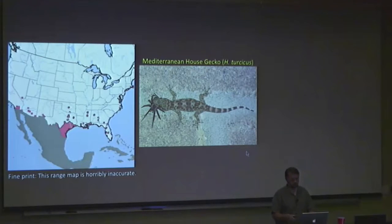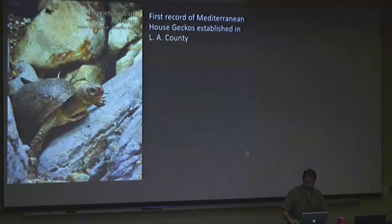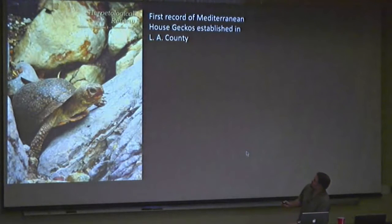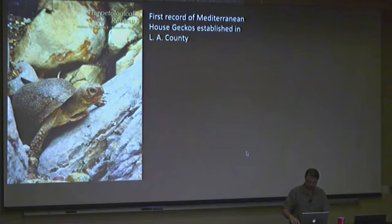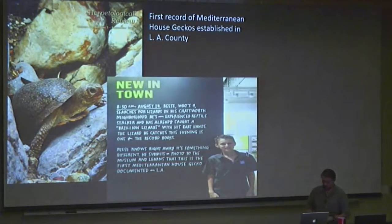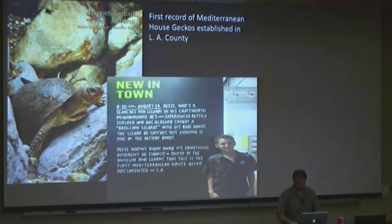Reese documented the first photograph of this gecko for Southern California — it had never been documented in LA County before. I worked with Reese and his dad, and in September 2013, Reese — who was 12 and in 7th grade at that point — was published in the peer-reviewed journal Herpetological Review. That mostly just points out how lazy the rest of us are, since a 7th grader got published in the scientific literature. We actually have an exhibit at the museum called The Nature Lab focusing on urban biodiversity in Southern California, where we tell the story of Reese's discovery.